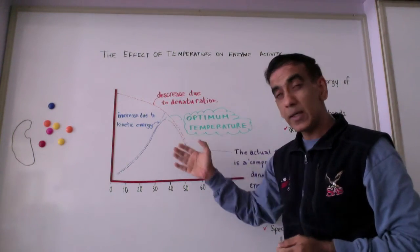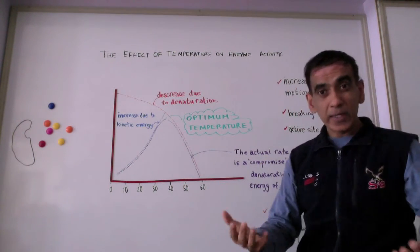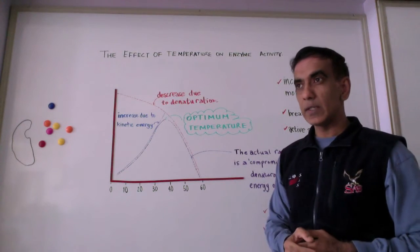And for enzymes in the human body, this temperature is 37 degrees Celsius.